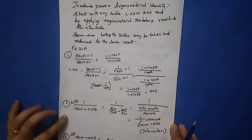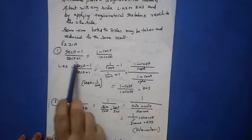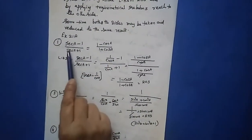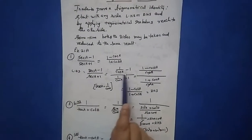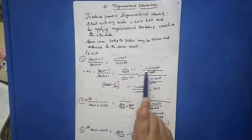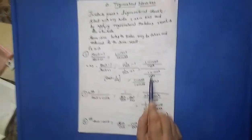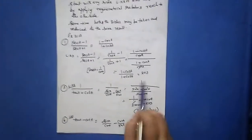Question number one: (sec a − 1)/(sec a + 1) = (1 − cos a)/(1 + cos a). Take the left hand side. Since sec a = 1/cos a, substitute: (1/cos a − 1)/(1/cos a + 1). Take LCM as cos a to get (1 − cos a)/(1 + cos a). Cancel cos a and you finally get (1 − cos a)/(1 + cos a), which equals the right hand side.